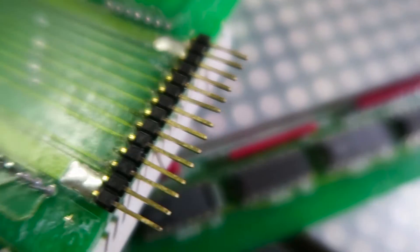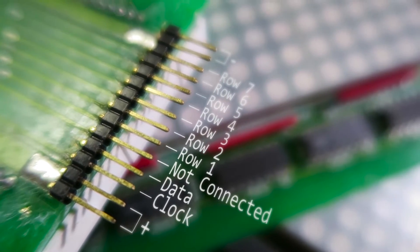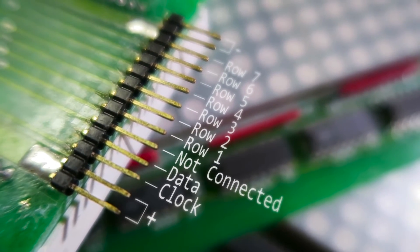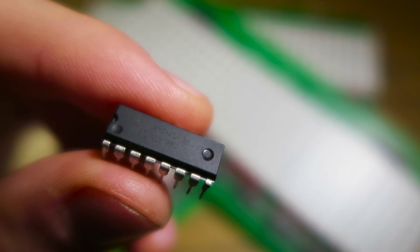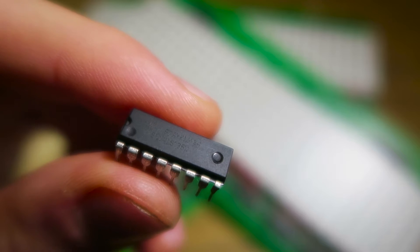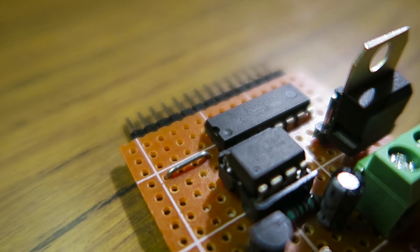The display module has 9 inputs: clock, column data, and 7 row select pins, but the ATtiny has only 5 output pins. As only one row select has to be enabled at a time, I can use a 3-8 decoder such as the 74LS138, which will let us control all 7 rows with only 3 microcontroller pins.